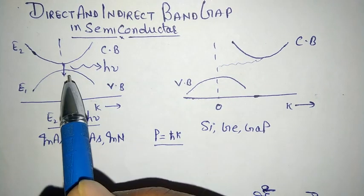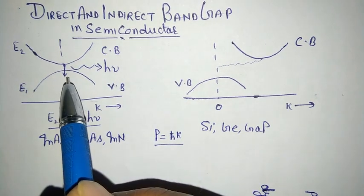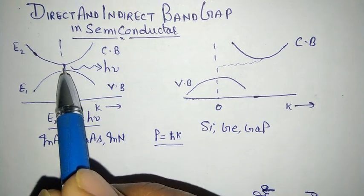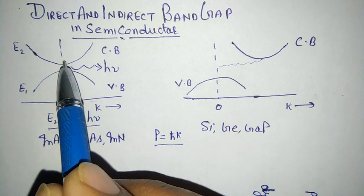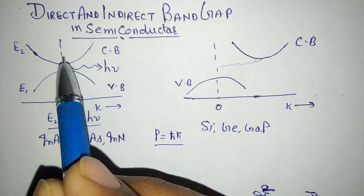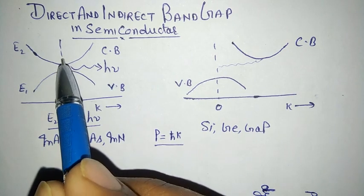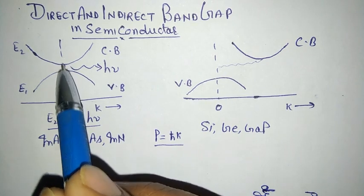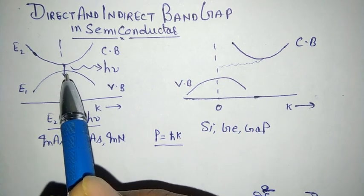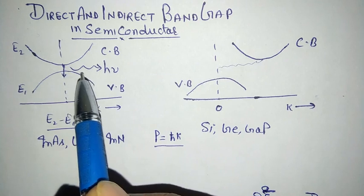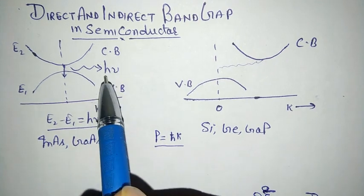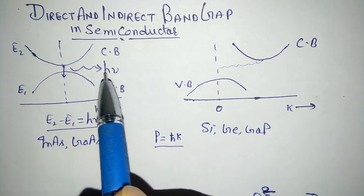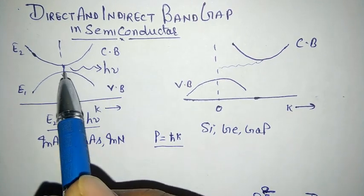If an electron goes from a lower state to a higher state and after its lifetime comes back from the higher state to the lower state, it radiates energy in the form of a photon, or in the form of light.